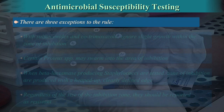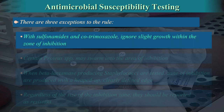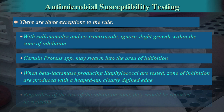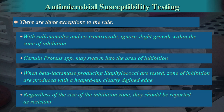There are three exceptions to the rule. With sulfonamides and cotrimoxazole, ignore slight growth within the zone of inhibition. Certain Proteus species may swarm into the area of inhibition. When beta-lactamase-producing Staphylococci are tested, zones of inhibition are produced with a heaped-up, clearly defined edge. Regardless of the size of the inhibition zone, they should be reported as resistant.